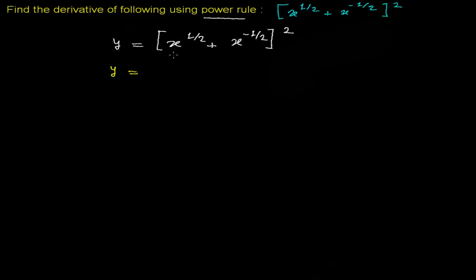Using the a plus b whole square formula: it will be a square plus 2 a times b plus b square.